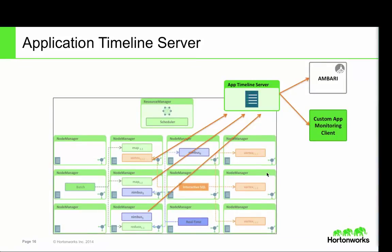A quick look at the architecture: every node manager on every single machine in the cluster is running containers. In this example, there are multiple applications running — a batch MapReduce application, a streaming application. They all emit metrics that they want to expose to end users. The containers or application masters directly send events to the central timeline server, which stores it in a store. Tools like Ambari, or custom monitoring clients written by users, can query the information stored in the timeline server and produce visualizations.